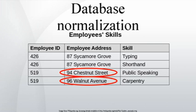Under certain circumstances, deletion of data representing certain facts necessitates deletion of data representing completely different facts. The faculty and their courses table described in the previous example suffers from this type of anomaly, for if a faculty member temporarily ceases to be assigned to any courses, we must delete the last of the records on which that faculty member appears, effectively also deleting the faculty member. This phenomenon is known as a deletion anomaly.